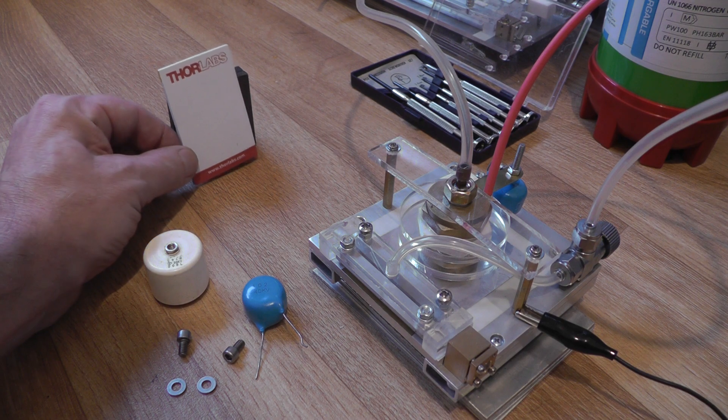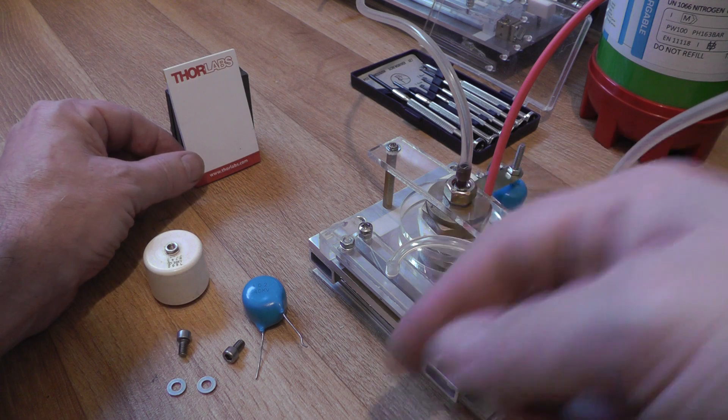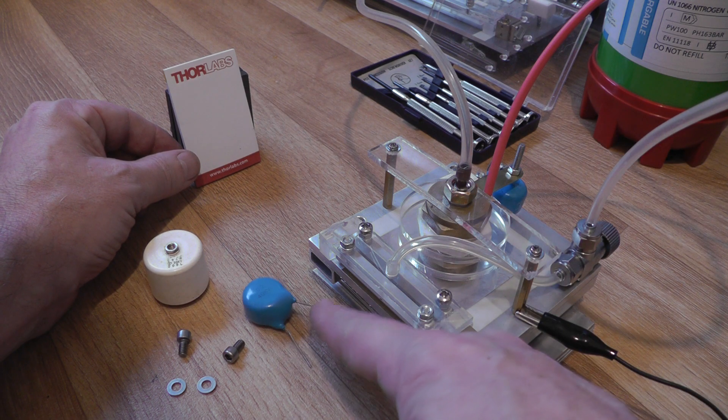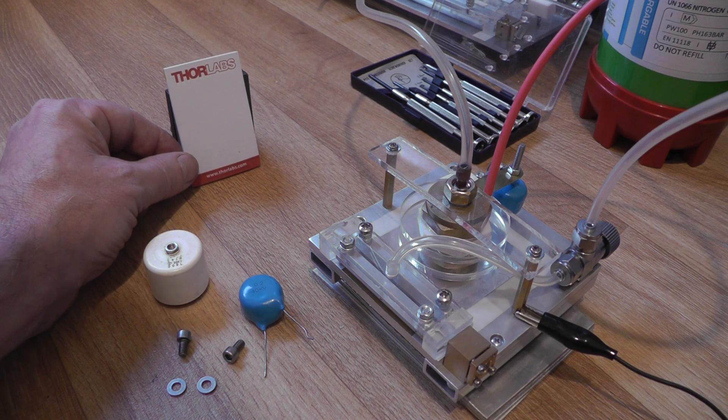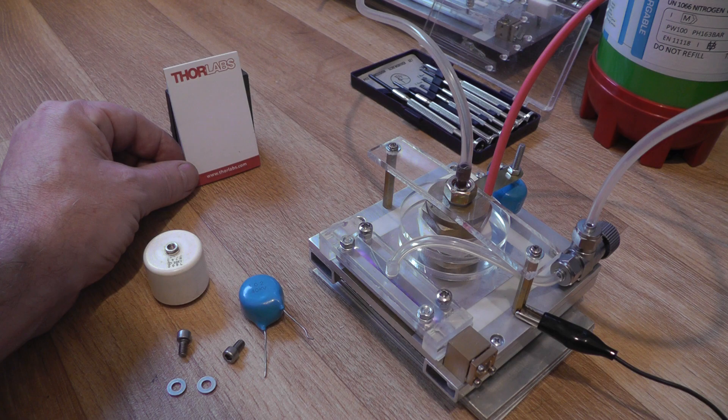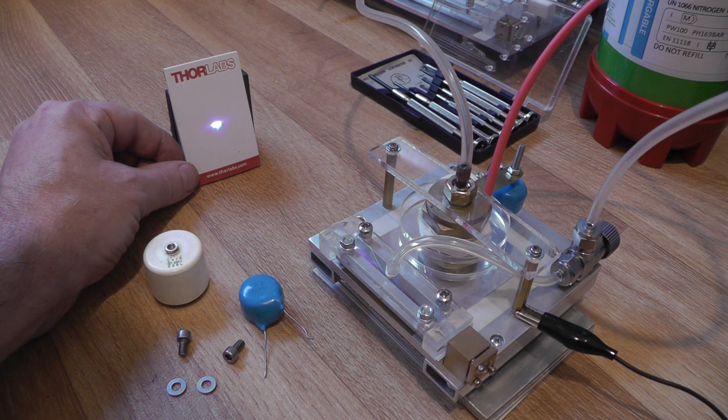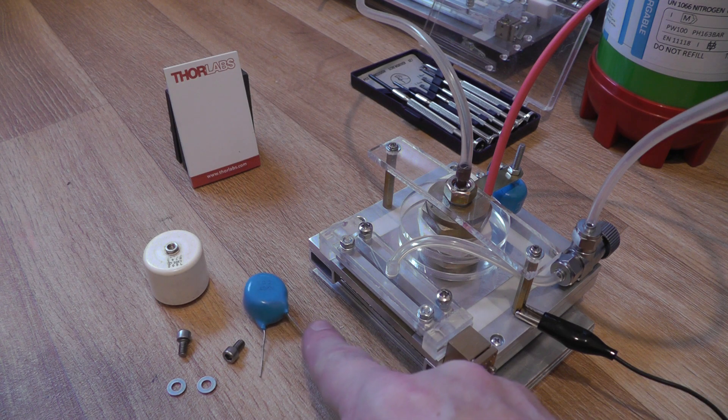We'll just take a quick look at the nitrogen laser beam itself on a fluorescent target here, and bearing in mind we're still using our wire-ended capacitor with a reduced voltage and a reduced spark gap pressure.